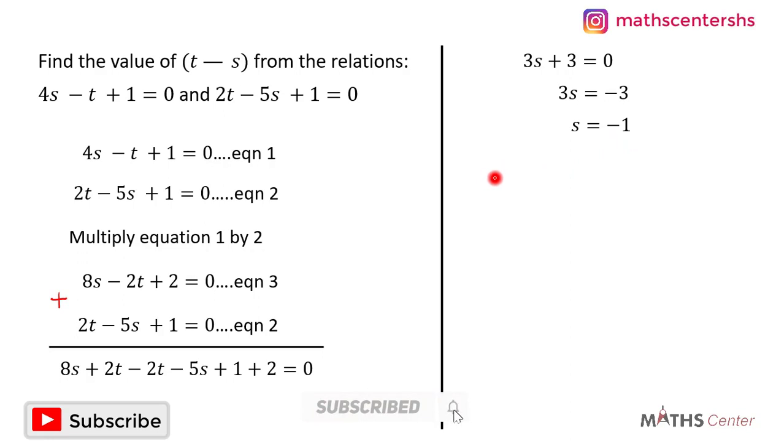Let's find t. From equation 1, we know that 4x minus t plus 1 equals zero. We have just found out that the value of x is negative 1. So I'll substitute x equals negative 1 into this equation to find t.